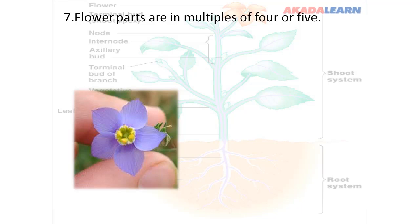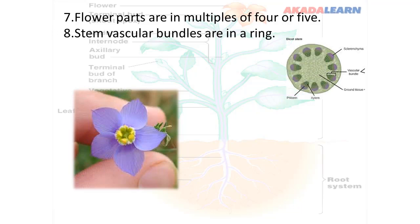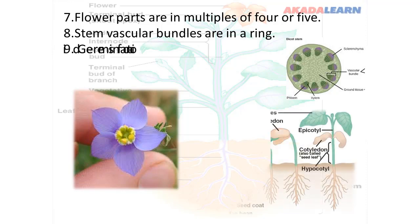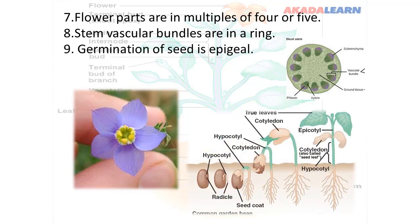If you count the flower parts, you can see five yellow parts and five purple parts — they are in multiples of five. The stem vascular bundles are in ring form, unlike monocots where they are scattered. Germination of the seed is epigeal, unlike the monocot which is hypogeal.